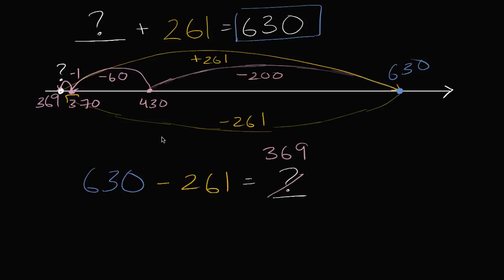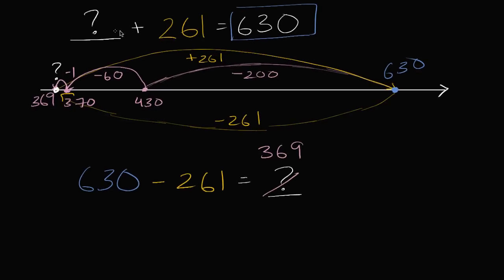Now another way we could've done it is we could've swapped the order. We could've said if blank plus 261 is 630, we could've said 261 plus blank is equal to 630. All I did is I swapped the order here.